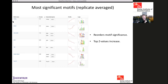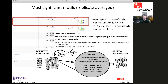Each motif name is a link to more detailed information. The top motif HNF4 alpha is well known to be a key transcription factor in hepatocyte development. This confirms that MARA's top prediction is in fact a known important developmental transcription factor in liver development — as discussed in literature showing that HNF4 alpha controls the initiation and maintenance of several key downstream transcription factors.